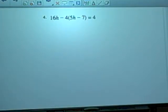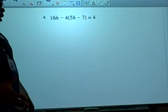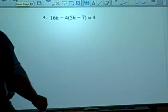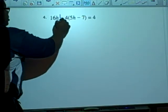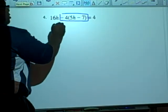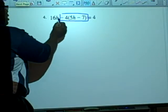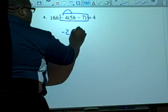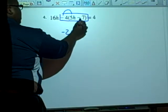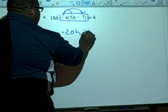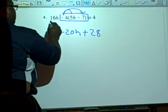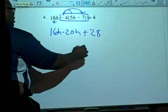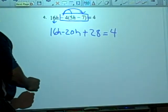Okay, number four, let's go ahead and look at it. I'm going to go through this fast because it is similar to question number three. So, just hang with me. First step, we're going to do parentheses. Don't forget the negative sign. That is a popular mistake. So, go negative four times five. That is negative 20H. Negative four times negative seven. That's plus 28. And then we did not use 16H. So, 16H and that equals four.